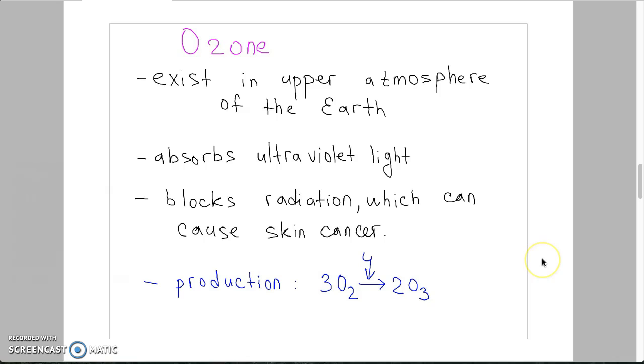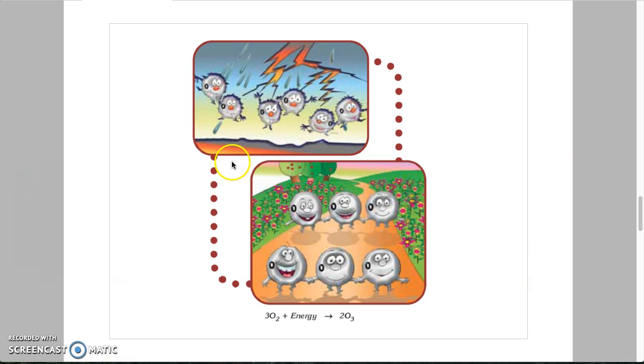If you want to produce ozone molecules, you need to take 3 oxygen molecules and make a reaction under the electric current. Here you can see the picture, 3 oxygen molecules are reacting under the electric current and in product will have 2 happy ozone molecules.